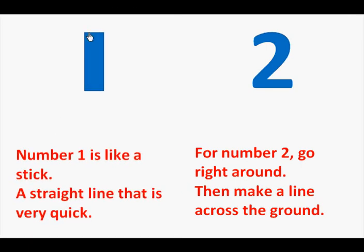Number 1 is like a stick, a straight line that is very quick. For number 2, go right around, then make a line across the ground.